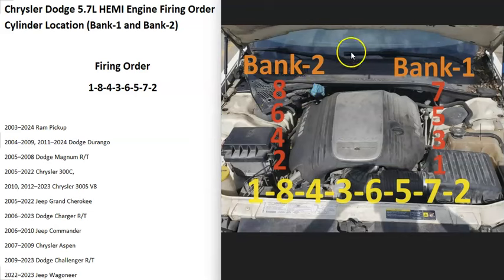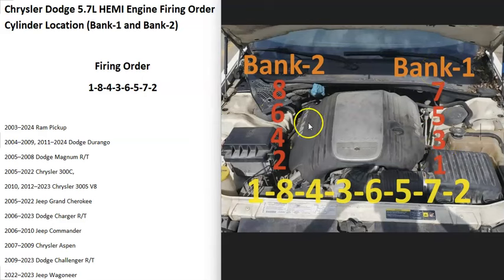Bank one is going to be on the right and bank two is going to be on the left. If you ever need to know what side of the engine is bank one or bank two, bank one is always the side of the engine with the number one cylinder, and the opposite of that is going to be bank two.